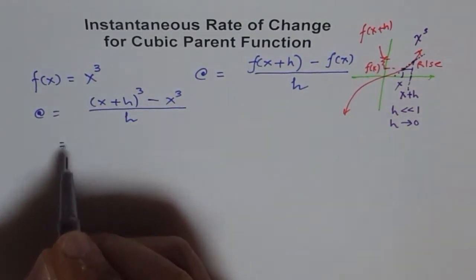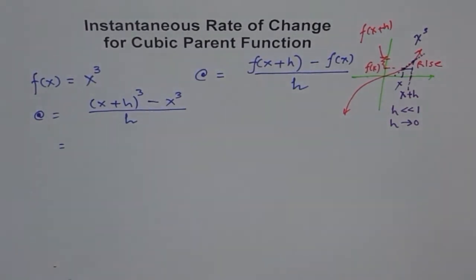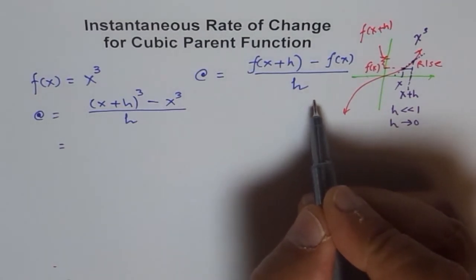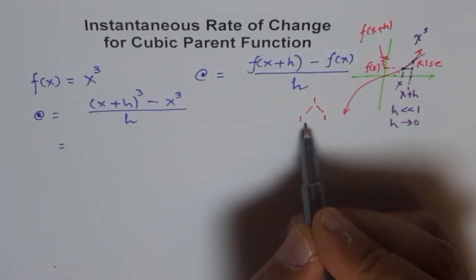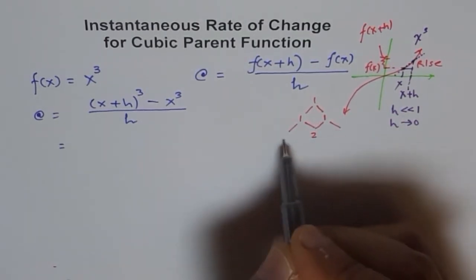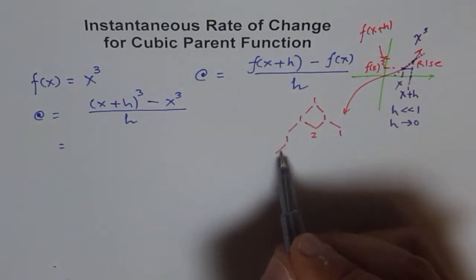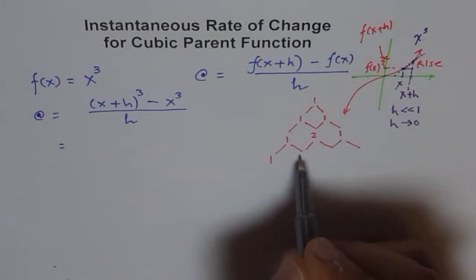I hope you remember what is (a+b)³. If you don't, you can take the help of Pascal's triangle. We start with 1, then 1,1, then when you add them you get 1,2,1. Going further down, you get the expansion for the cubic equation.